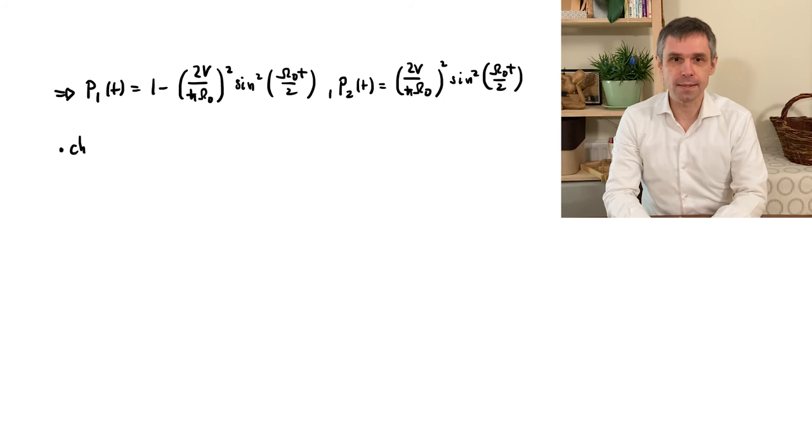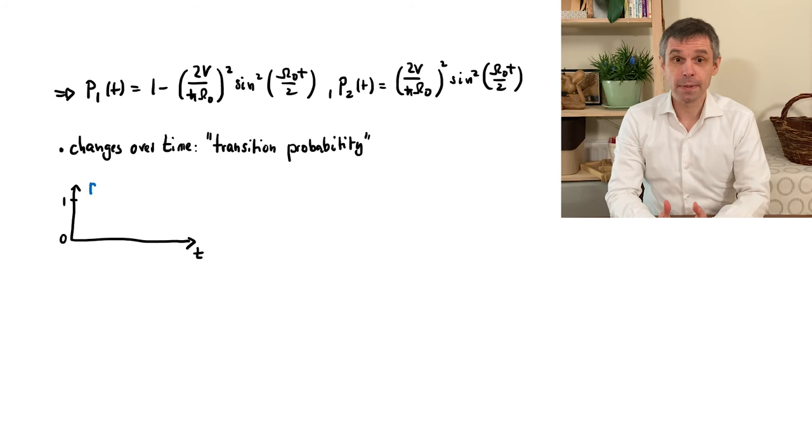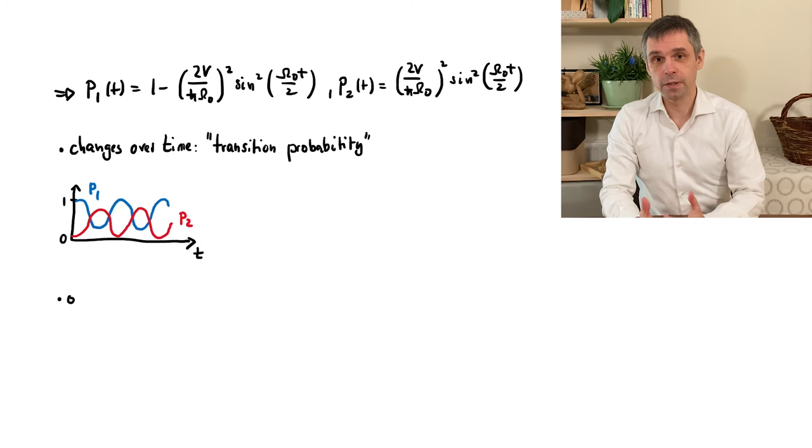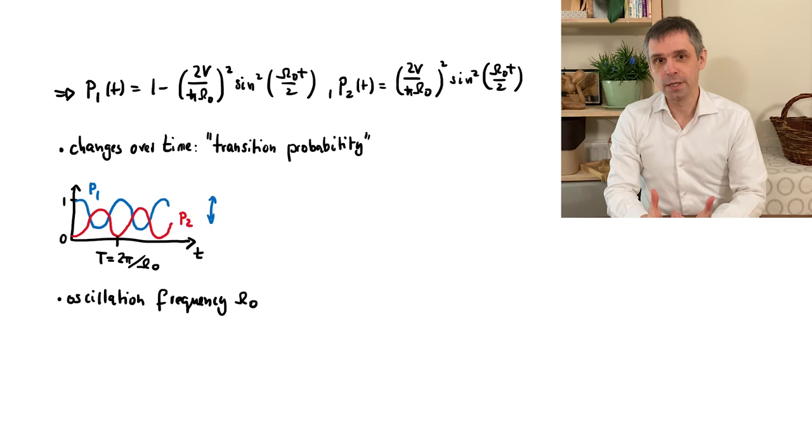The process where we start in one eigenstate of the static system and end up in another eigenstate, we call a transition between the two states. And the corresponding probabilities, we can therefore also call transition probabilities. So this changes now over time, as shown here. The probabilities display very distinct oscillations, which are indeed the eponymous Rabi oscillations that give this problem its name. The oscillation frequency is just the Rabi frequency omega 0, which then determines the oscillation period in the standard way, as indicated here.